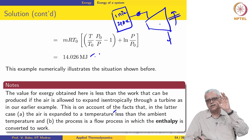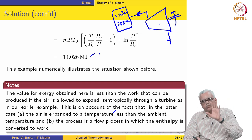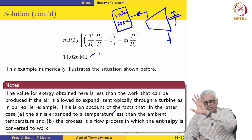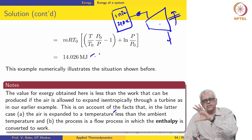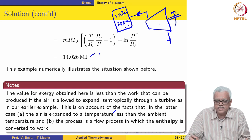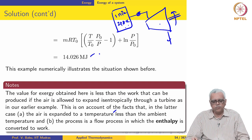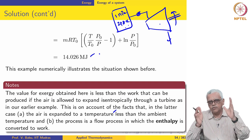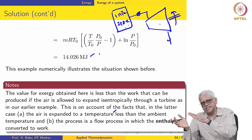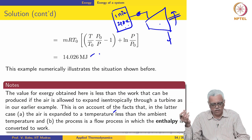Exergy is always defined with respect to the dead state. Whatever process is executed, the system finally attains the dead state which is 100 kPa, 298 Kelvin — not 100 kPa at some other temperature as in that earlier situation. That is why this value comes out to be different, but it is consistent with the framework that everything is done with respect to the ambient or dead state.